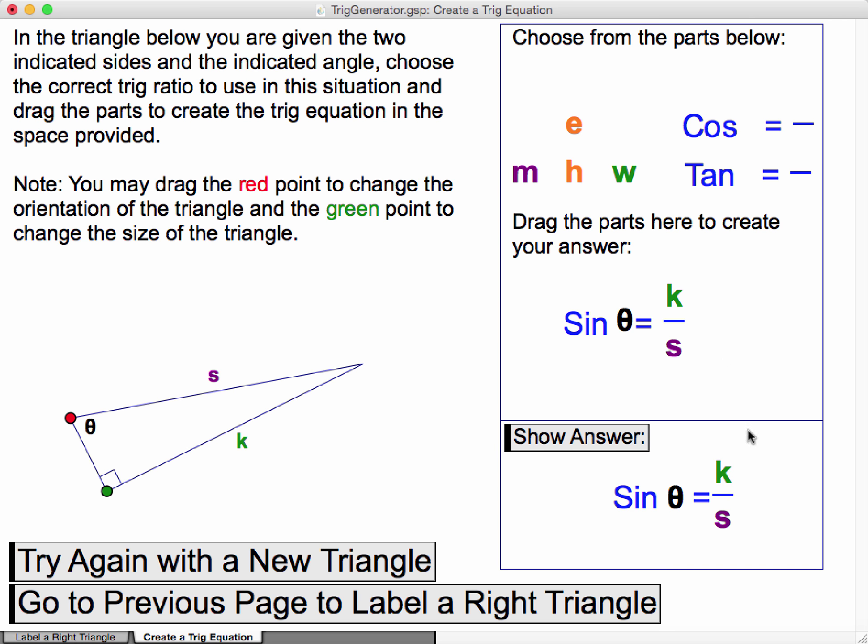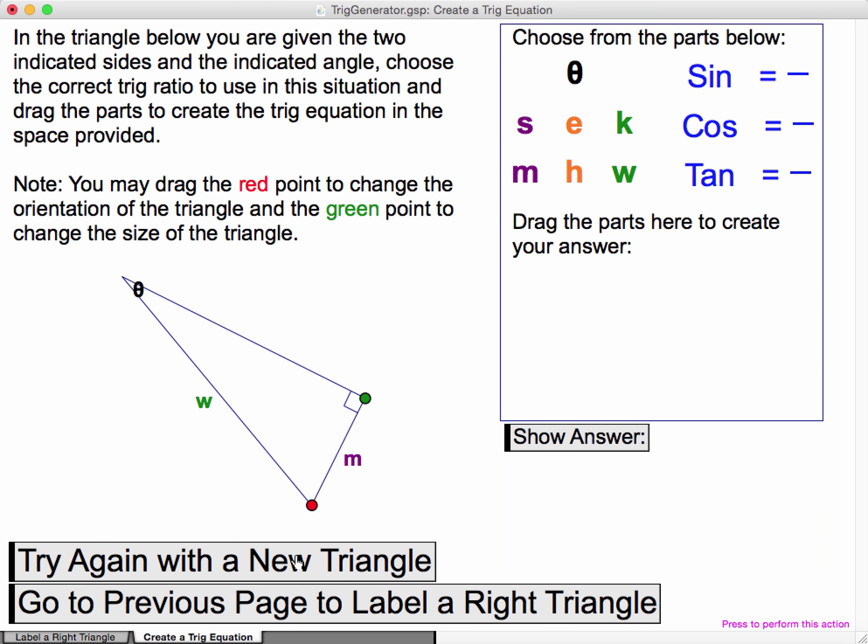And then they hit show answer to check if they're correct, and try again with a new triangle, and it randomly selects the angle and shuffles the letters to make a new triangle that they have to build the trig ratio equation from.